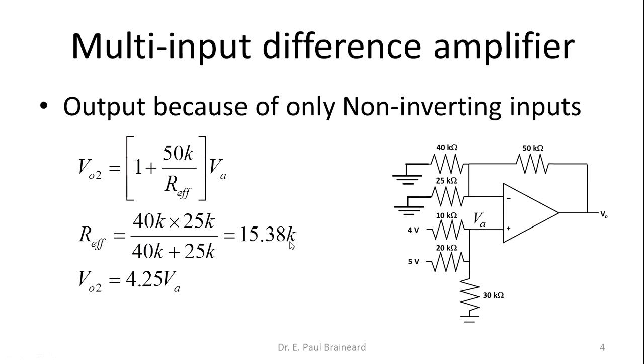If we solve this problem, the output voltage because of the non-inverting input VA is this expression V02 equals 4.25 times VA. We need to relate this VA to the 4V as well as 5V voltage sources.